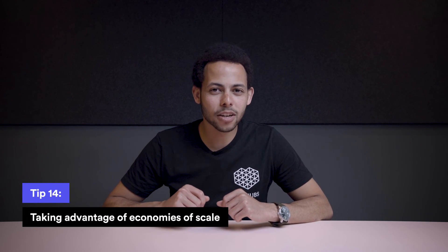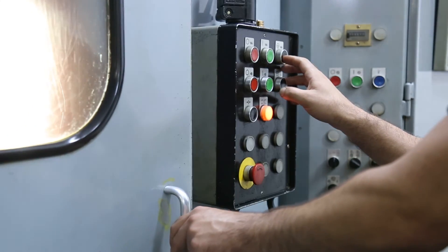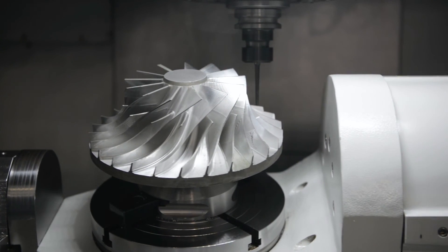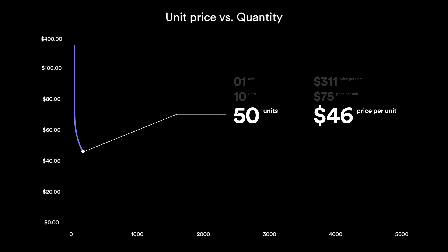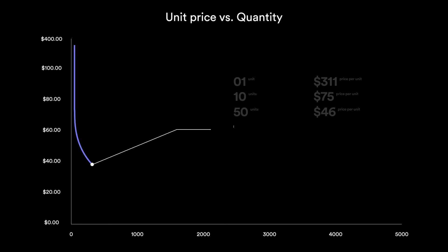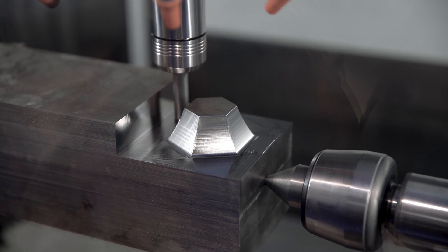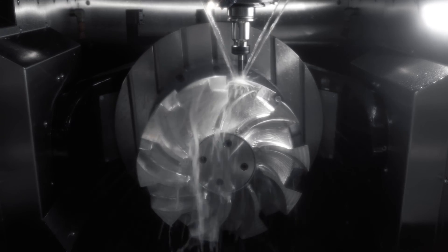Tip number 14: take advantage of economies of scale by ordering larger quantities or placing repeat orders. In CNC machining, quantity greatly affects the unit price because startup costs are relatively high and represent a large percentage of cost at low quantities. For large quantities, these startup costs are nearly eliminated as they are divided over many parts. A graph of 12 different parts machined in stainless steel 304 shows the drop in unit price is almost exponential — even a small increase in quantity can decrease the unit price significantly. Ordering very high volumes can reduce the unit price by 5 to 10 times.